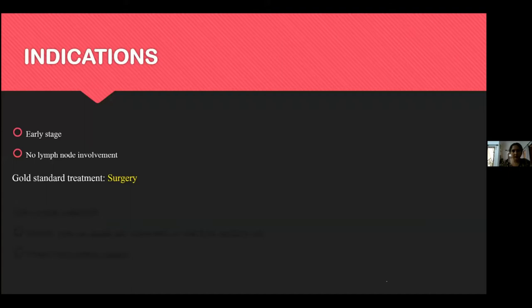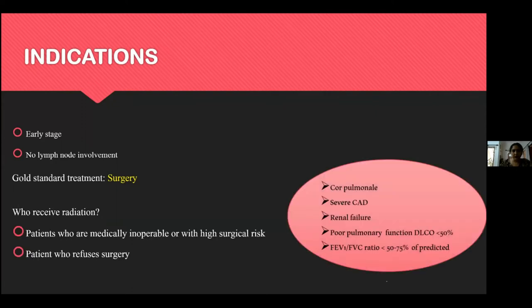The gold standard for early stage non-small cell lung cancer is surgery. Radiation is considered when patients are medically inoperable or have high surgical risks — such as cor pulmonale, coronary artery disease, or very poor pulmonary function test results — and also for patients who refuse to undergo major thoracic surgery.